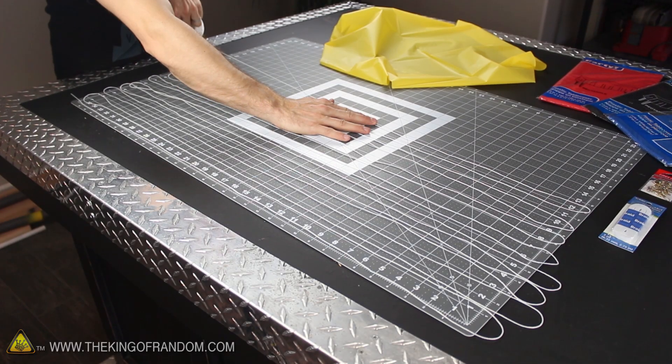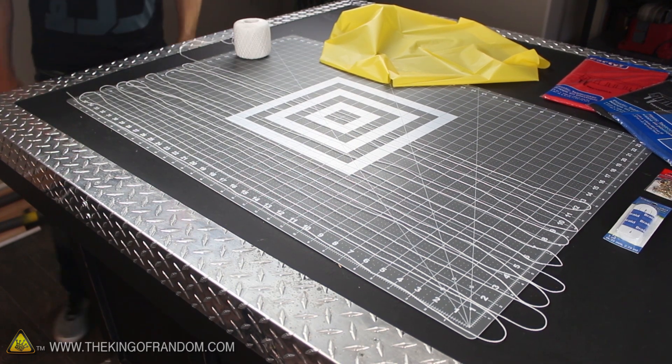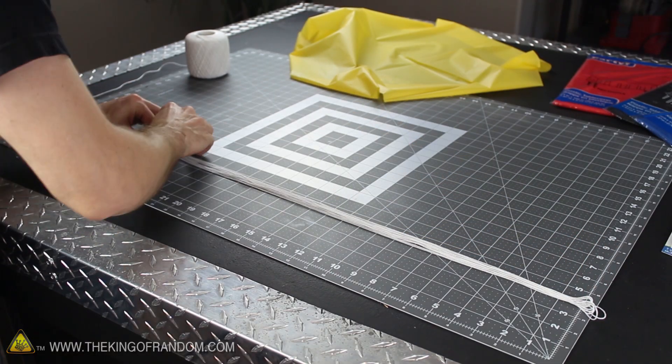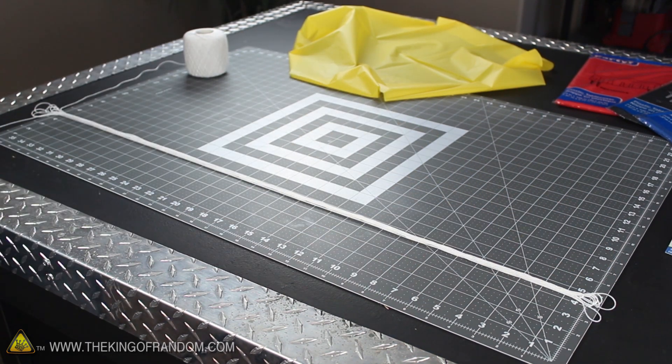Now our parachutes only need 2 strings about 33 inches long, but in an effort to mass produce them for 8 parachutes at once, I strung out 16 lines in a zigzag pattern, then collected them all together into one long bundle so they could be cut at the same time.